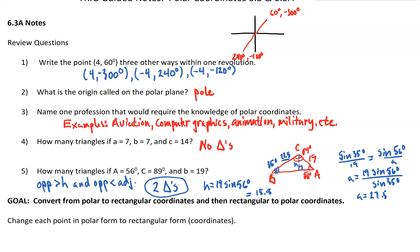The last review question: How many triangles if A is 56 degrees, C is 89 degrees, and length B is 19? There would be two triangles possible, because the opposite is greater than the height but less than the adjacent, so you have two possibles.